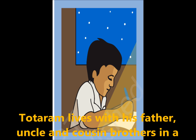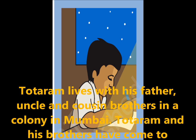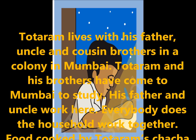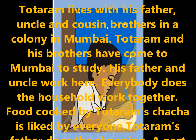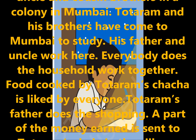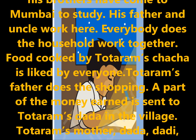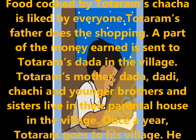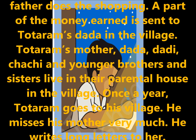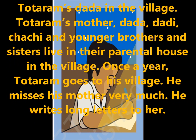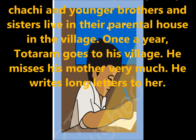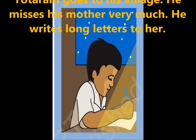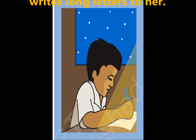Totaram lives with his father, uncle, and cousin brother in a colony in Mumbai. Totaram and his cousin brother have come to Mumbai to study, while his father and uncle work there. Everybody does the household work together. Food cooked by Totaram's chacha is liked by everyone, and Totaram's father does the shopping. A part of the money earned is sent to Totaram's dada in the village. Totaram's mother, dada, dadi, chachi, and her younger brothers and sisters live in their parental house in the village. Once a year, Totaram goes to his village — he misses his mother very much and writes her long letters.